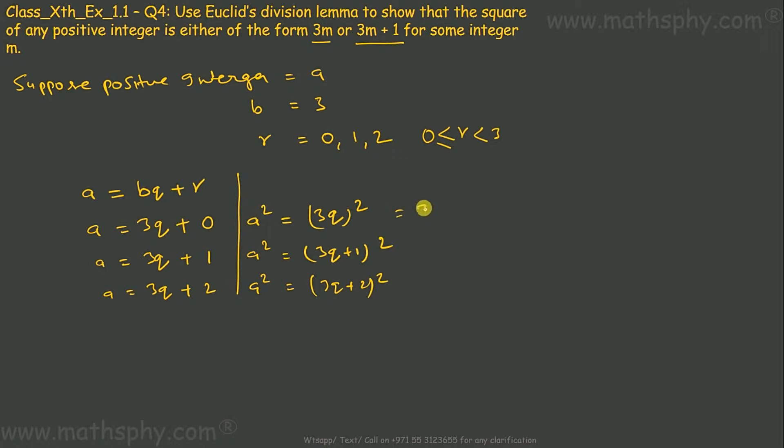So this would be 9Q². This would be 9Q² + 6Q + 1. This would be 9Q² + 6Q + 4. A plus B whole square gives you A² plus B² plus 2AB.